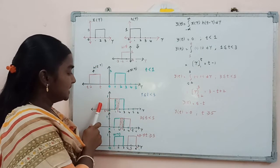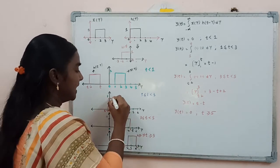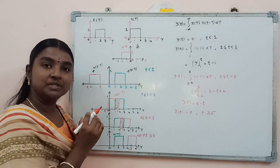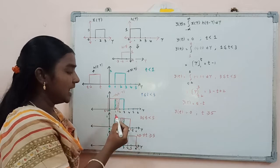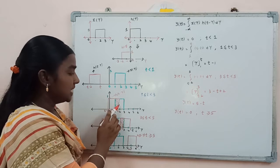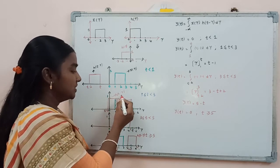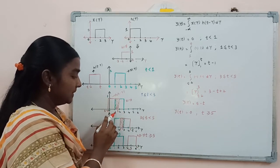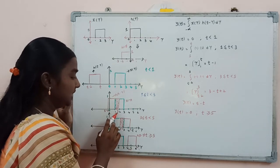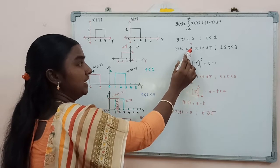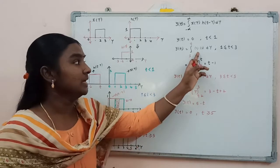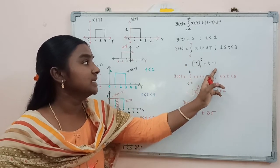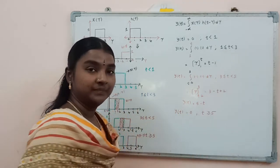Moving to the next graph, we shift h(t-τ) towards the right side. As we move this signal to the right, an overlapping area appears between x(τ) and h(t-τ). The common integral limits are from 1 to t. With both x(τ) and h(t-τ) having amplitude 1, performing the integration gives y(t) = t - 1 in the period 1 ≤ t < 3.